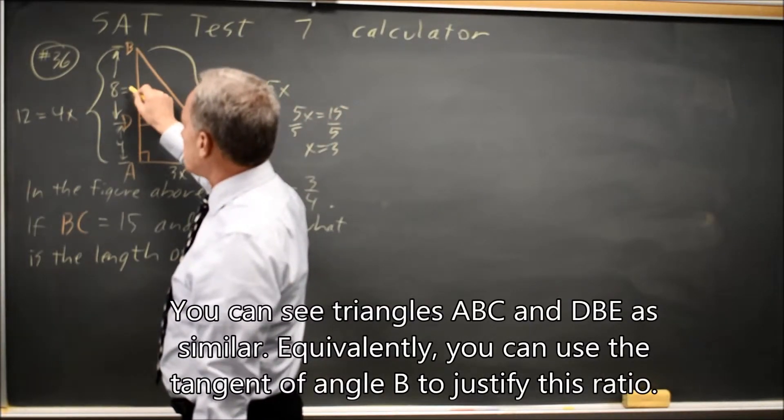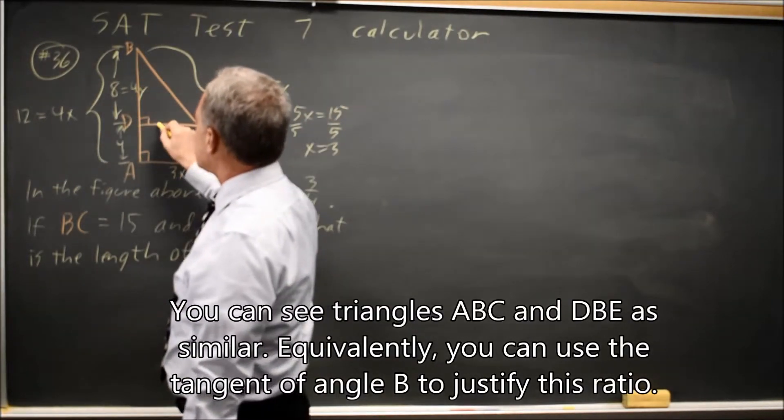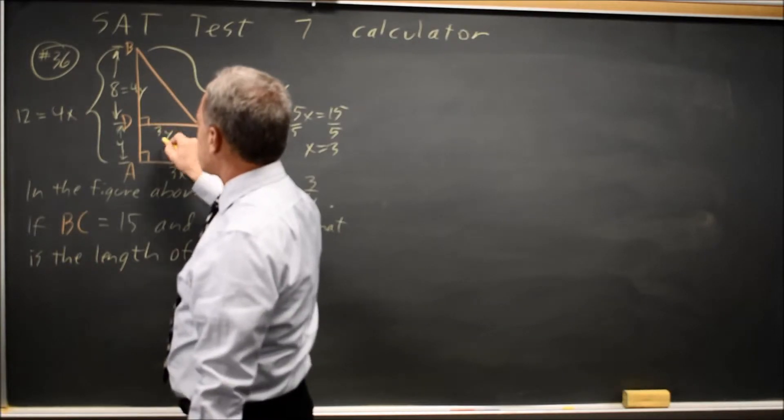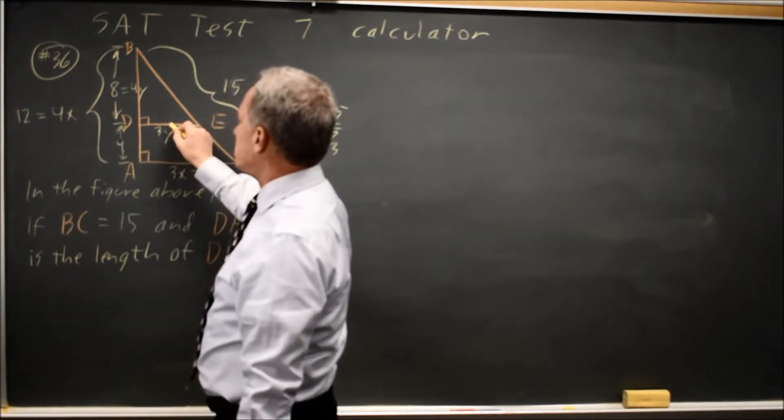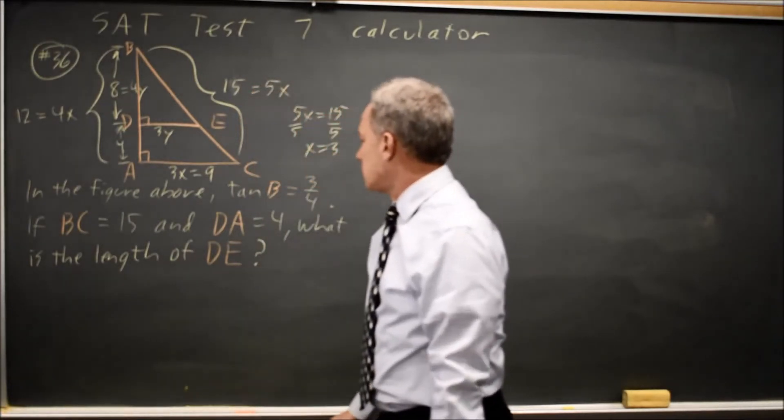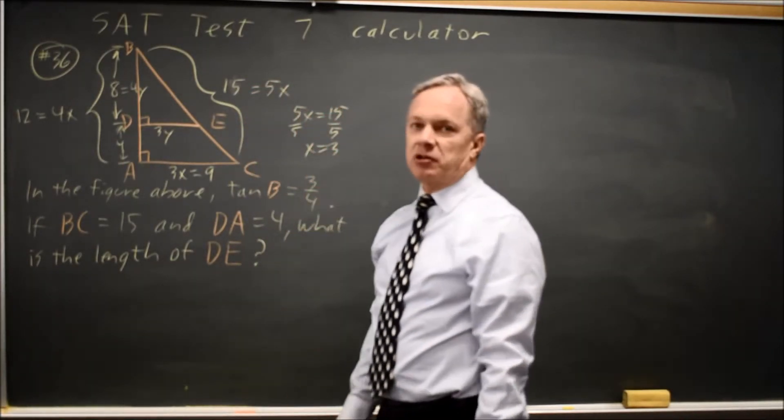so if BD is, I'm going to call it 4Y, then side DE is going to be 3Y, because the ratio of DE over BD is 3 over 4, from the tangent of angle B.